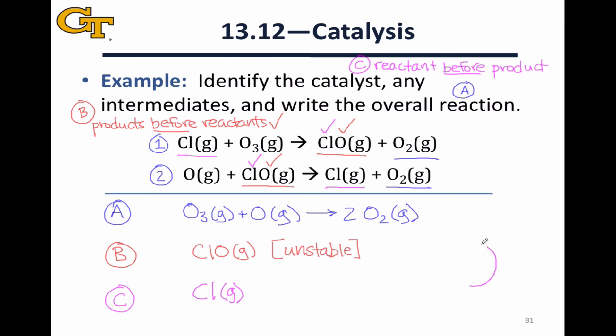And we end up with a mechanism that includes a species that just keeps going around and around and around, over and over and over again. This is what we call a catalytic cycle.